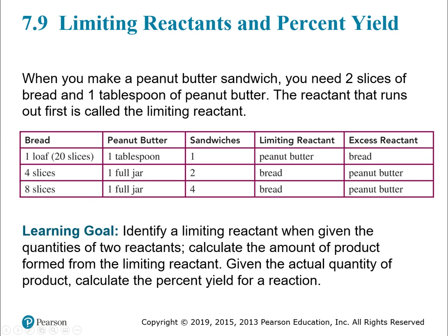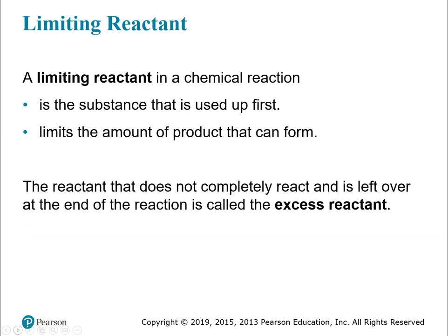We're getting a little more complicated now. We're going to talk about limiting reactants and percent yield. A limiting reactant in a chemical reaction is the substance that's used up first. It gets used up, and it limits the amount of product you can make. The reactant that doesn't get completely used up is called the excess reactant — you have some leftover.